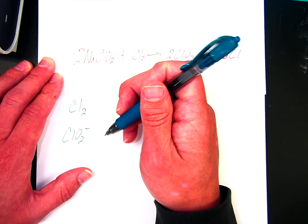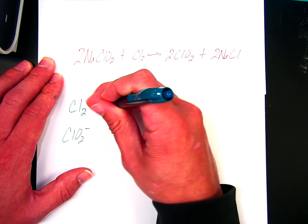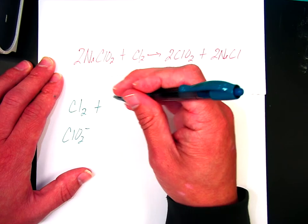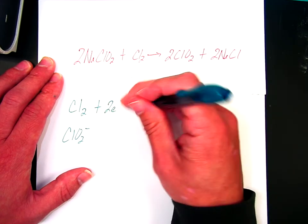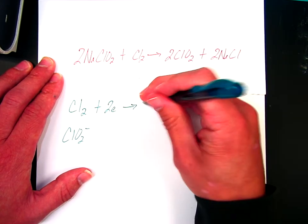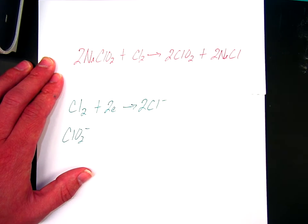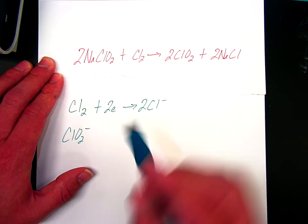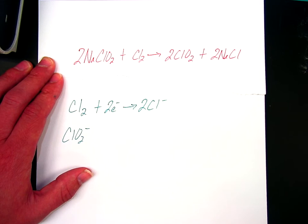So it ends up once balanced looking like this. On the other side it would be Cl minus, and then we'd have to make everything balance out.